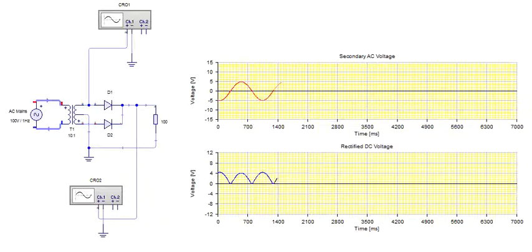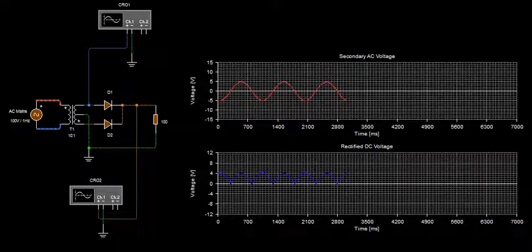We can see the current directions also. Here you can see the AC current is constantly changing its direction, but here on this path the direction of the DC current is always constant.